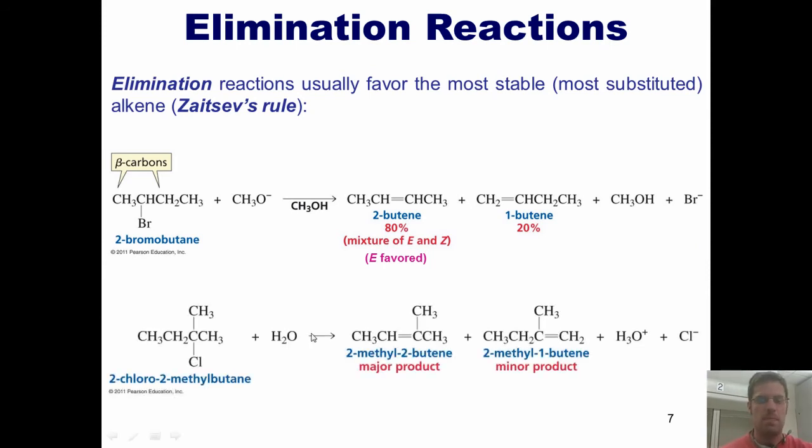Here's another example. You can imagine water acting like a base and grabbing either the hydrogen to the right of this chlorine to form a carbon-carbon double bond out here, or the hydrogen to the left, forming a carbon-carbon double bond internally. While both products are indeed formed, the major product is the more substituted internal alkene, because it is the more substituted alkene according to Zaitsev's rule.